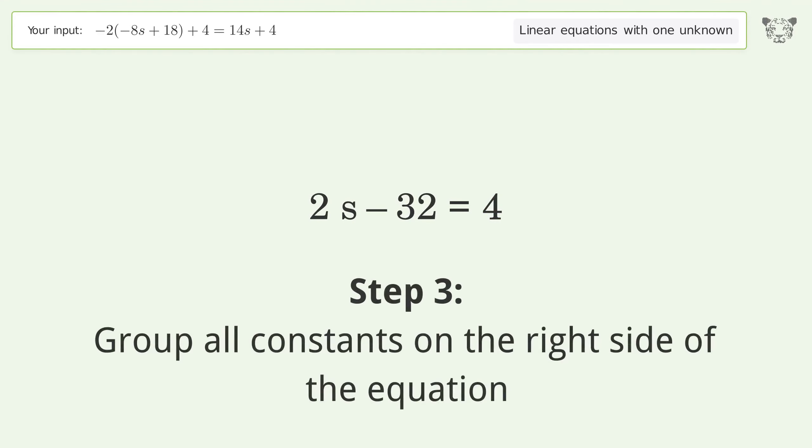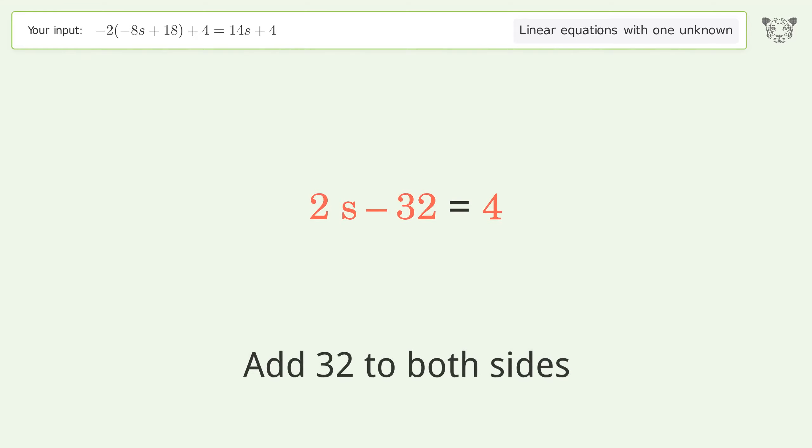Group all constants on the right side of the equation. Add 32 to both sides and simplify the arithmetic.